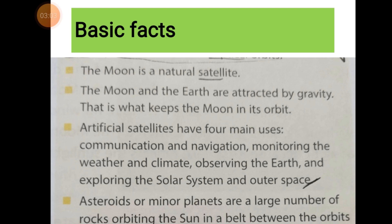Natural satellites are those that are present in nature — those that exist naturally. For example, the moon and the sun are natural satellites.